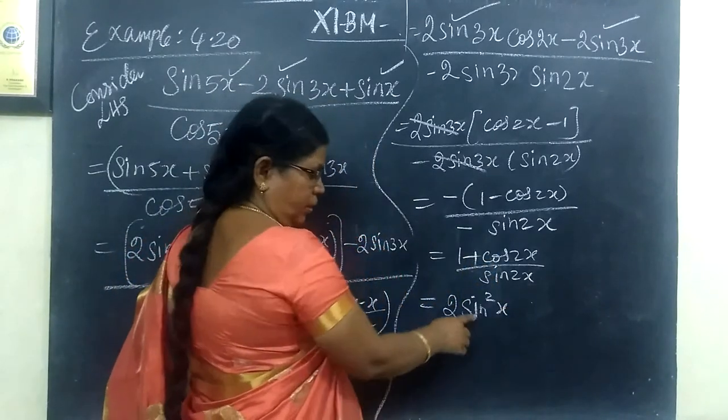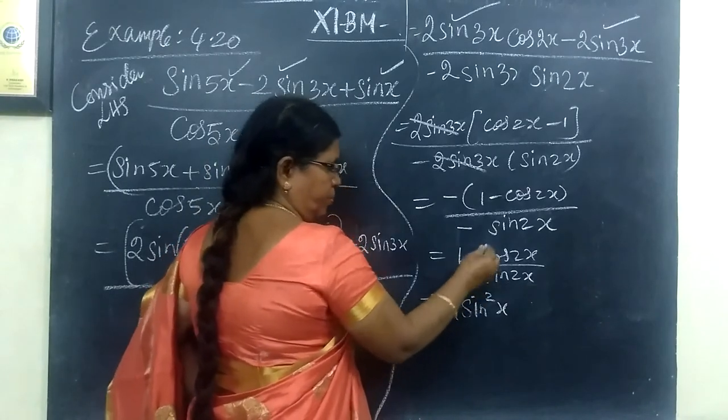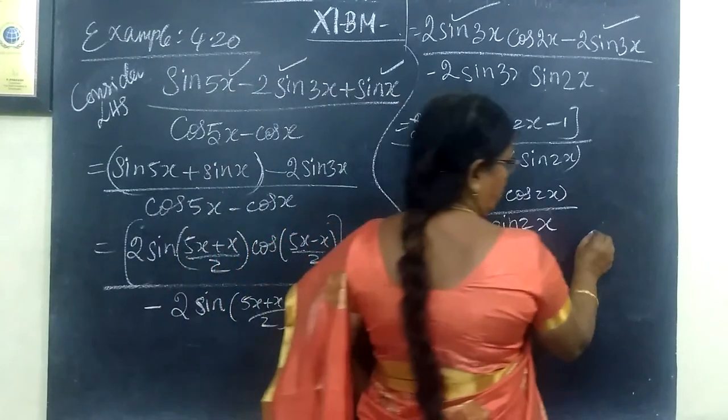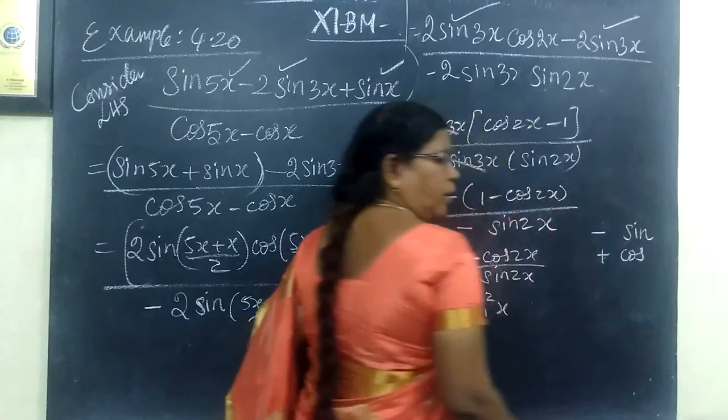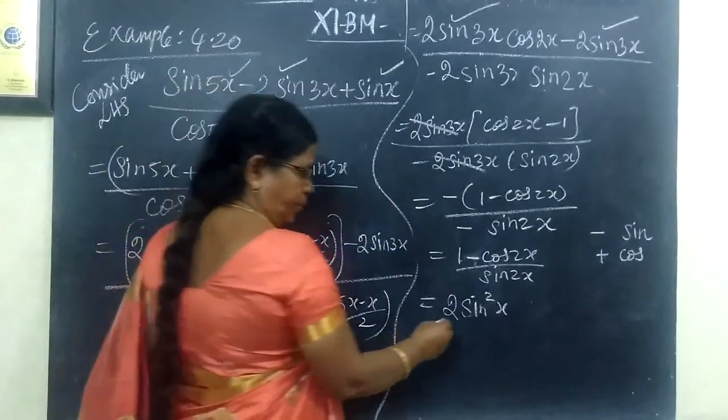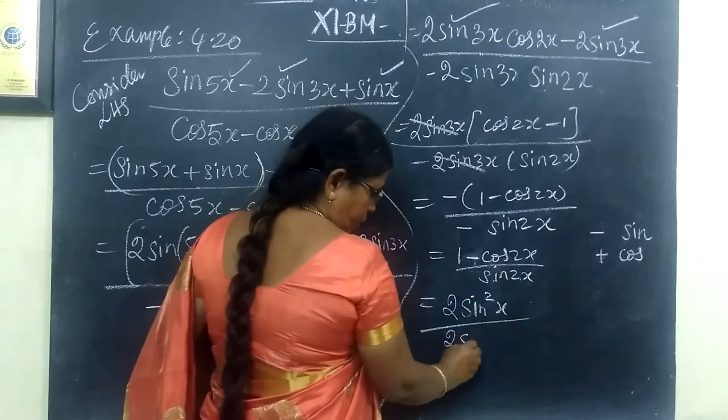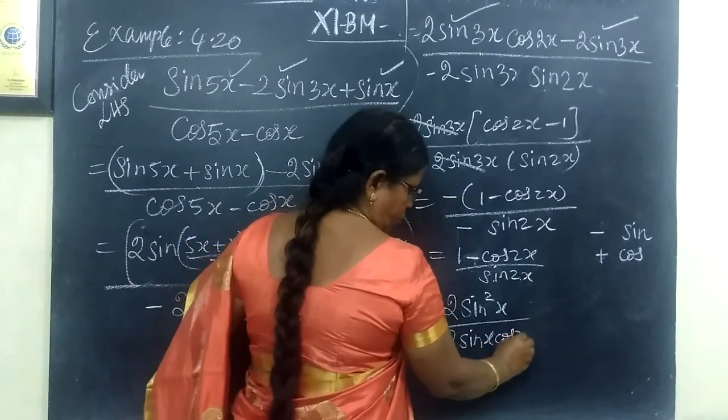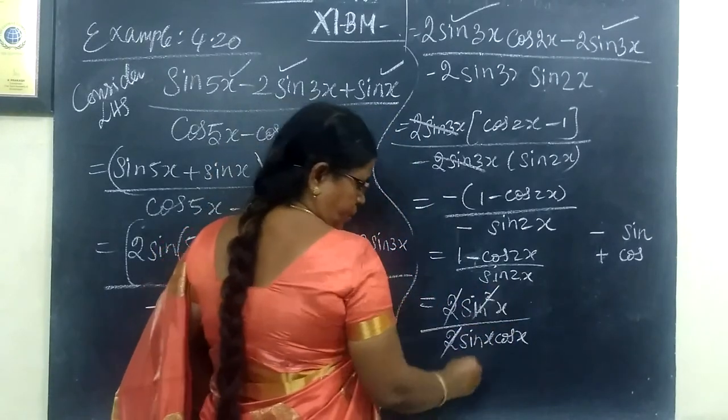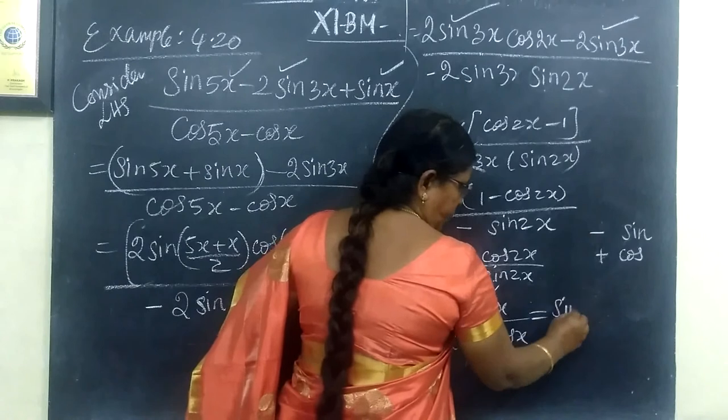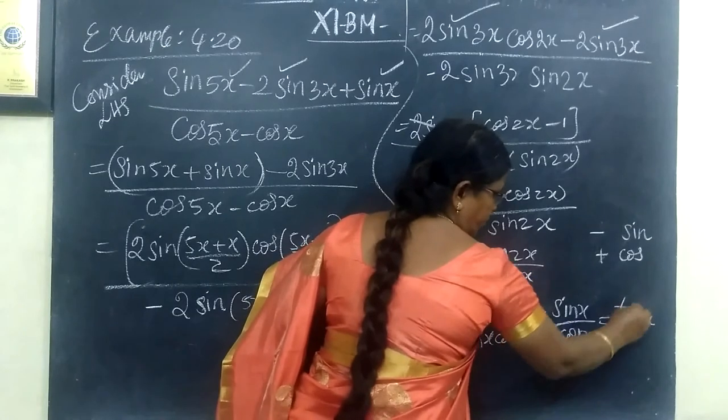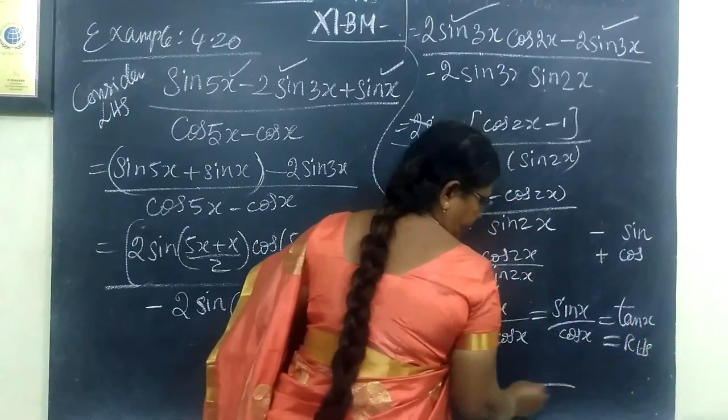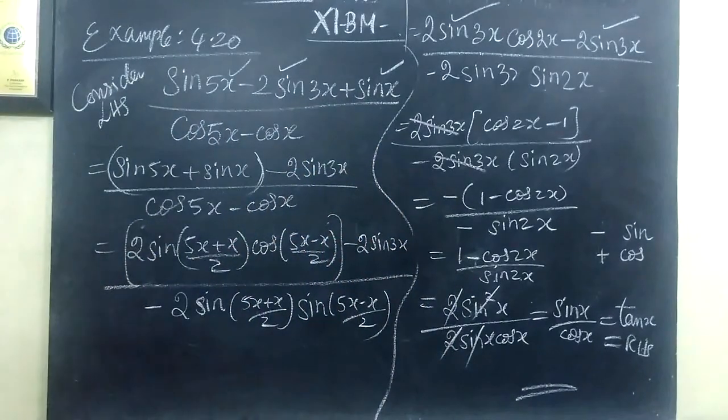1 minus cos 2x by 2 is 2 sin squared x. Sin 2x in the formula 2 sin x cos x. You know this formula very well. 2 cancel, sin cancel. You are getting sin x by cos x. This is tan x. So equal to RHS. So this is the answer.